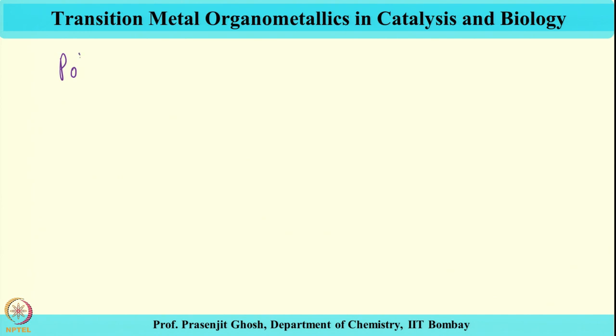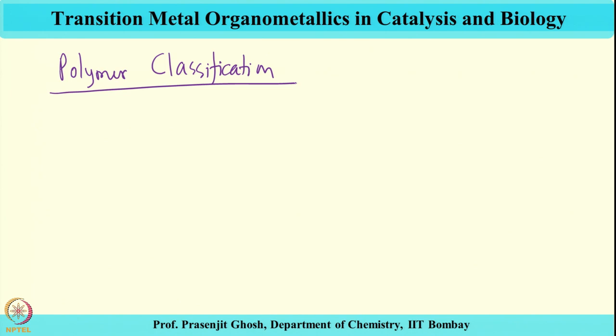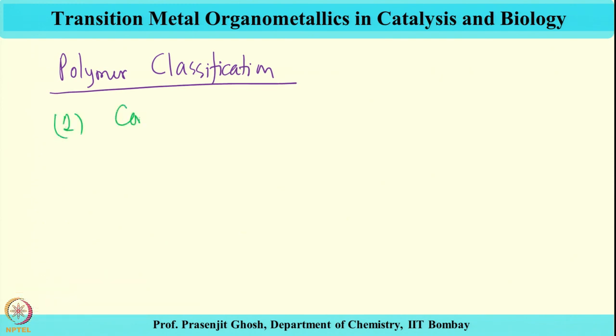These are from the perspective of the process by which the polymers were synthesized. Similarly, from the mechanism perspective, there are two types: step growth and chain growth polymers. In the last class, we were talking about the process perspective — that is, condensation polymers and addition polymers.